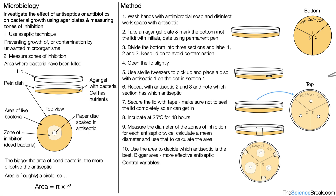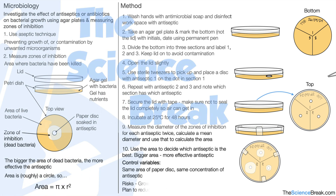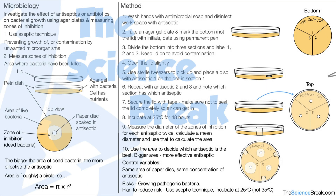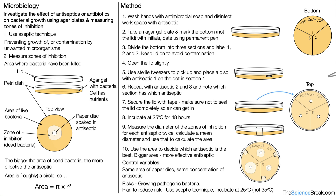Control variables — these are things we keep the same. We keep the same area of paper disc and the same concentration of antiseptic. Regarding risks, we could accidentally grow pathogenic bacteria. To reduce this risk, we use aseptic technique as defined earlier, and we incubate at 25 degrees Celsius, not higher temperatures such as 35 degrees Celsius, which would be a much more optimal temperature for contaminating bacteria to grow.